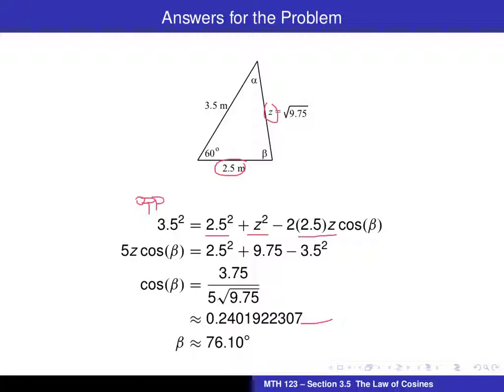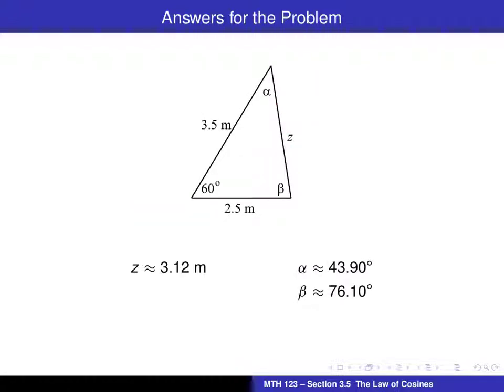The nice thing about taking the extra time to do that is we now have a nice handy check on our work. And in fact, the check, again, here is a summary of the results. I've rounded off z to the nearest hundredth. But you can see if I take 43.90 degrees plus 76.10 degrees plus the given angle of 60 degrees, that adds up to 180 degrees. And so, I have a pretty good check on my work. It's probably not a perfect check, but that sure helps convince me that the work I have done in solving this triangle is correct.